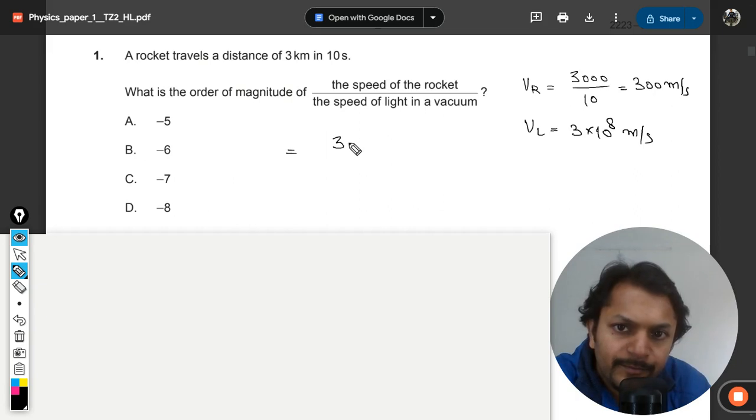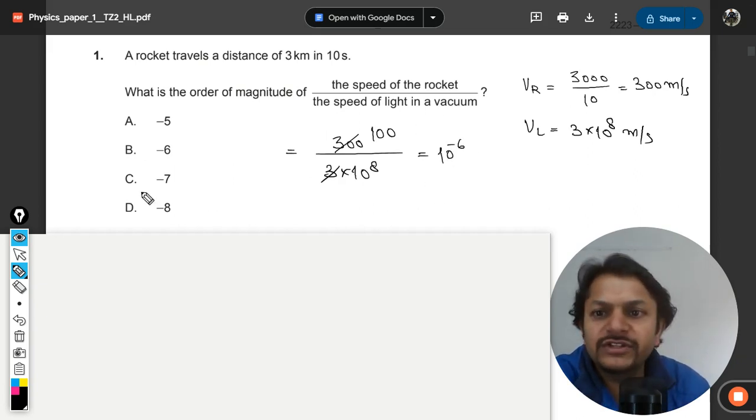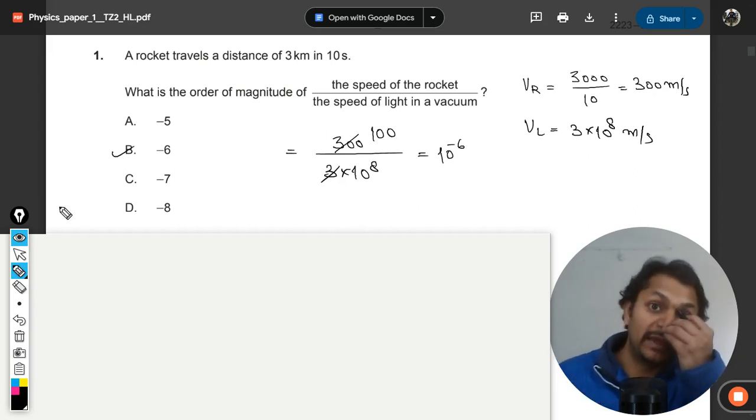We can now find the ratio. That will give you 100, and clearly your answer is this. So clearly the answer will be B.